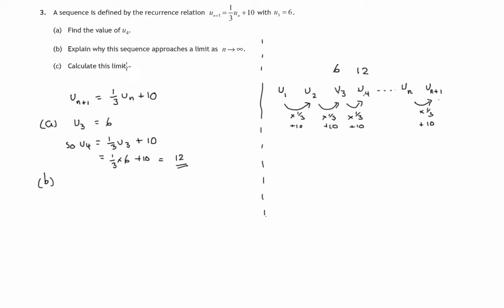Now part B asks you to explain why this sequence of numbers approaches a limit as n gets larger and larger. And basically the reason is this multiplier here. The multiplier, one-third, lies between minus one and one. It's a fraction less than one, but bigger than negative one. And if that's the case, if this multiplier lies between negative one and one, then the sequence of numbers that you get will eventually get closer and closer to some fixed number. So explain why this sequence approaches a limit: the multiplier lies between negative one and one, so a limit exists.